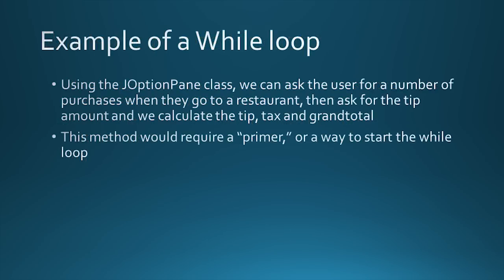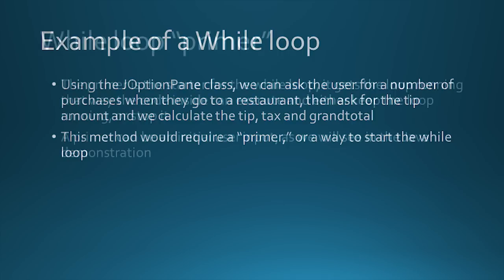An example of a while loop: using the JOptionPane class we can ask the user for a number of purchases when they go to a restaurant, then ask them for a tip, and calculate the tip, the tax, and the grand total. This method will require something called a primer — a way to start the while loop. We'll see all of this in the actual demonstration.